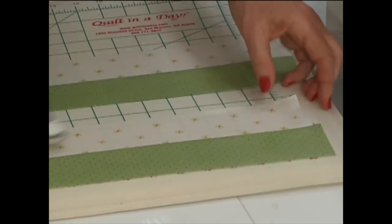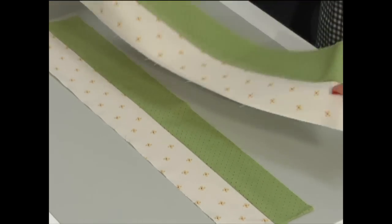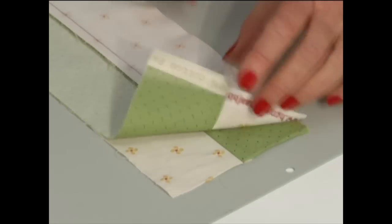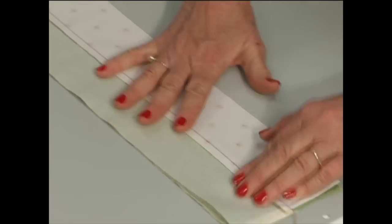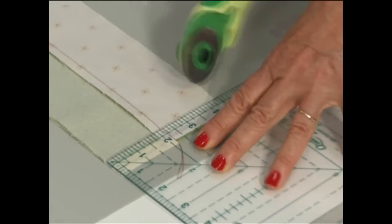Now place the first strip with dark across the bottom and then the second one right sides together with dark across the top. Mush those seams, line them up so they lock together. With your ruler, trim off the salvage edge and get rid of it.